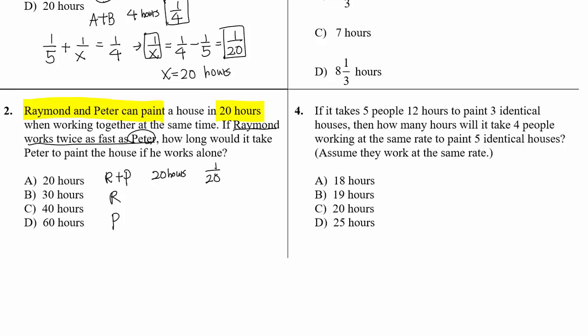If Peter takes 2X hours, Raymond — who is twice as fast — takes only X hours. So Raymond's rate is one over X and Peter's rate is one over 2X. When you add these two, that is the combined rate: one over X plus one over 2X equals one over 20.